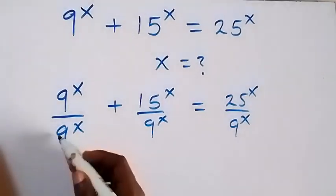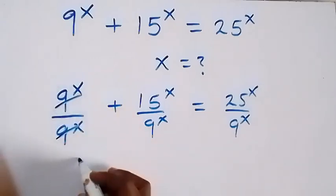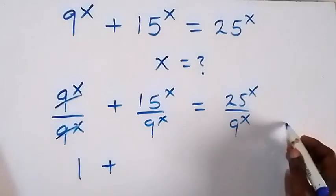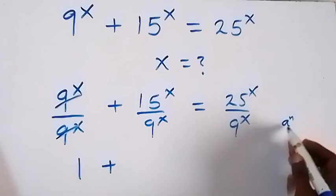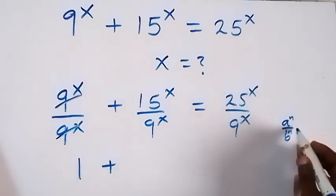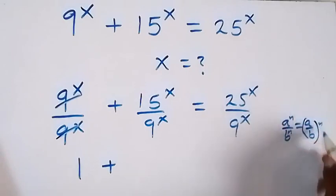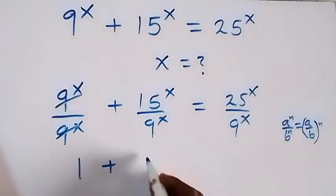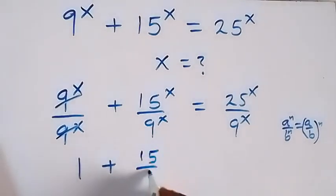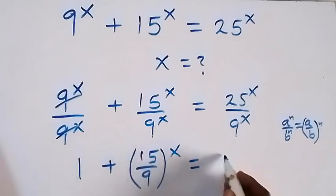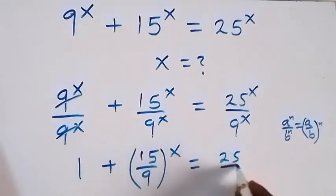Then next, let's cancel out to get 1, then plus. What we have here: when we have a raised to power x over b raised to power x, it's the same thing as (a over b) raised to power x. This gives us (15 over 9) raised to power x, then equals (25 over 9) raised to power x.